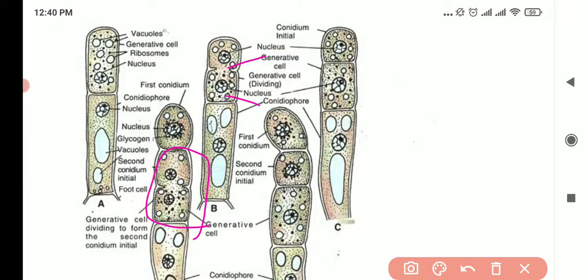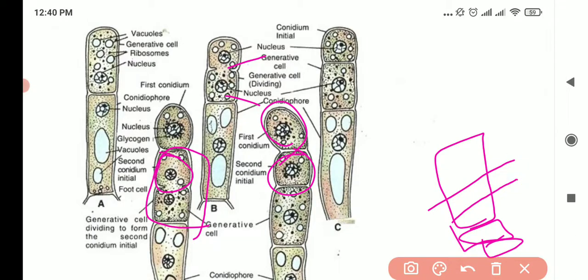And then you will get a first conidium and then a second conidium. So this generative cell divides. This is the generative cell, this is the foot cell, conidium initial below. So what happened? This one divides. So now we have two cells.